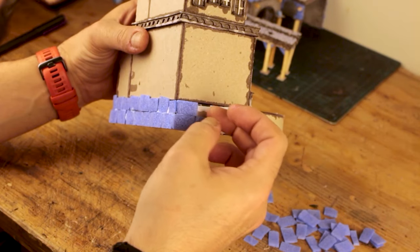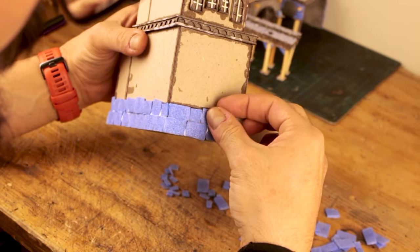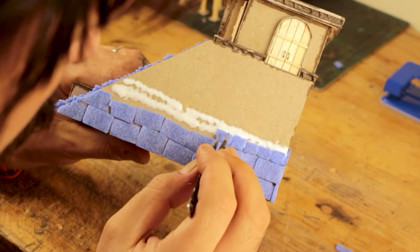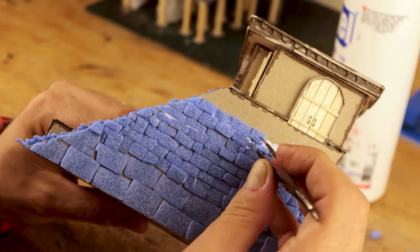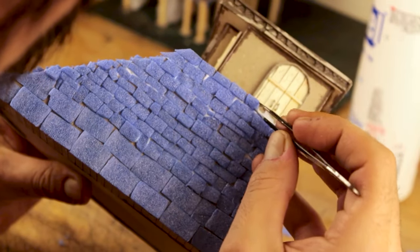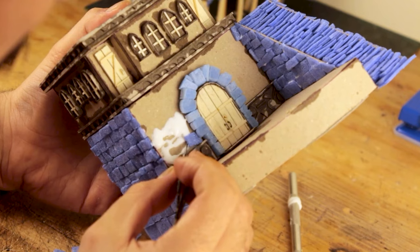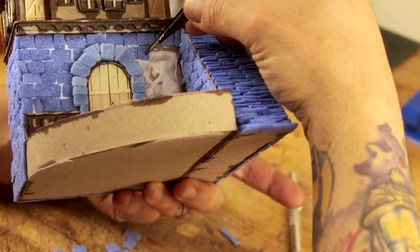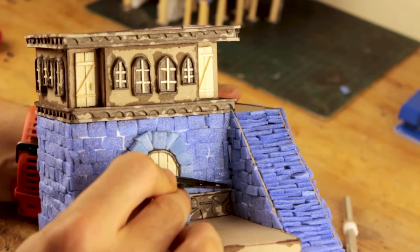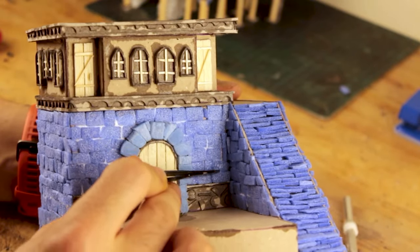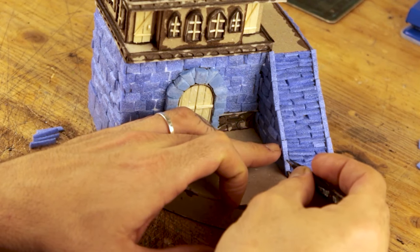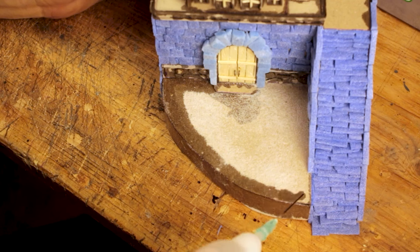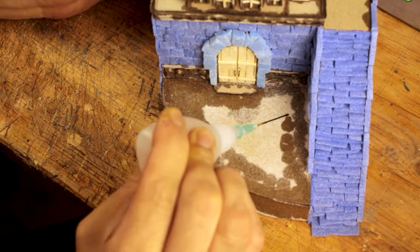While waiting for the steps glue to dry I started working on the stonework all over it. Used bigger stones on the bottom side of the walls to differentiate the overall look of it. Made sure to cover the top parts on the sides of the stairs where I could see the cardboard. Then with baking soda and CA glue I applied some texture on the ground floor.